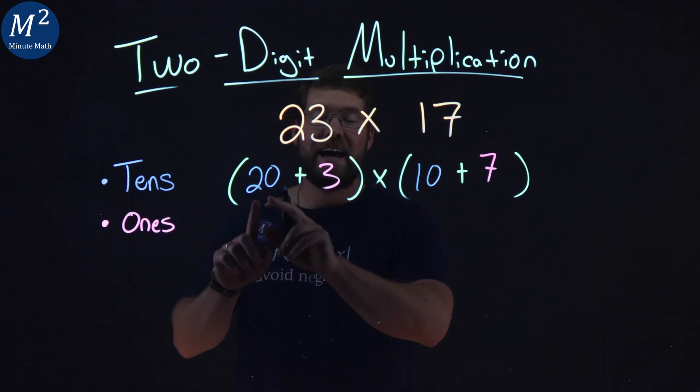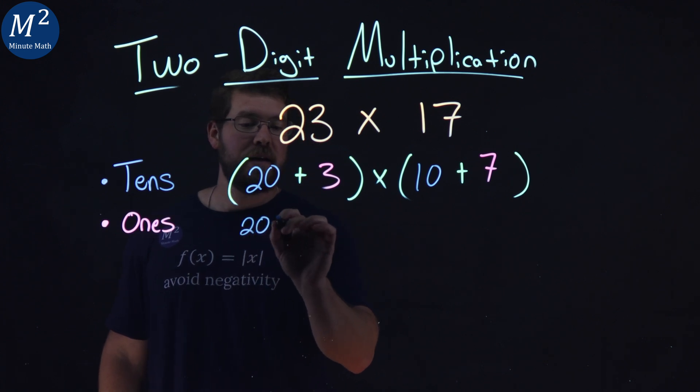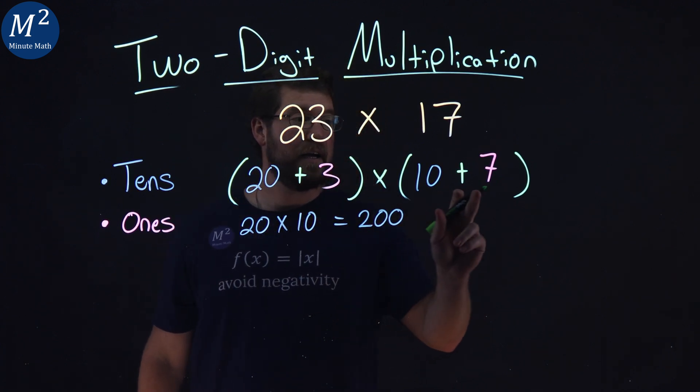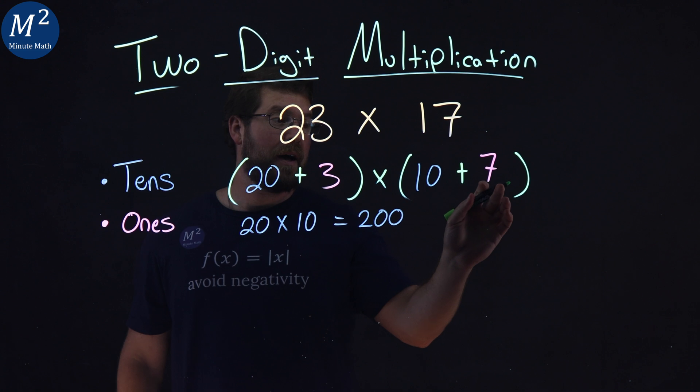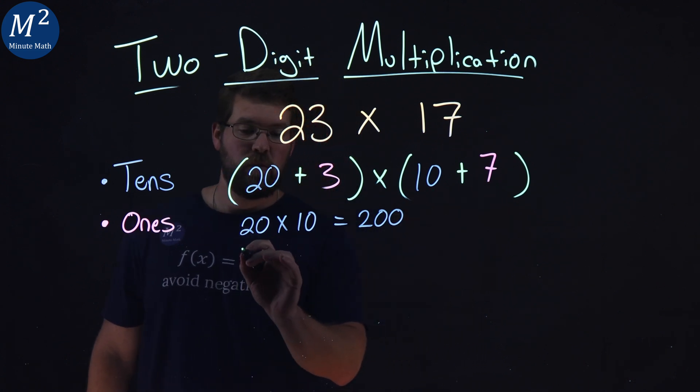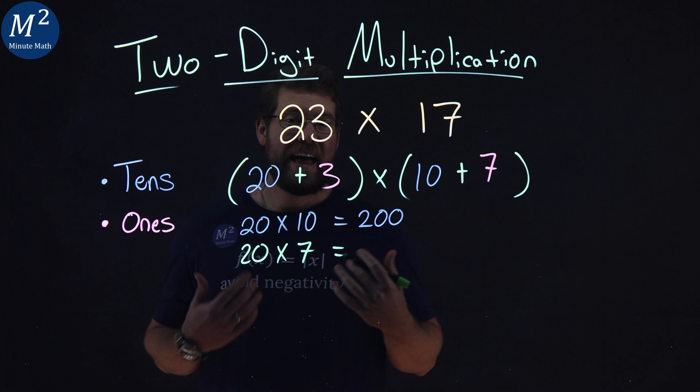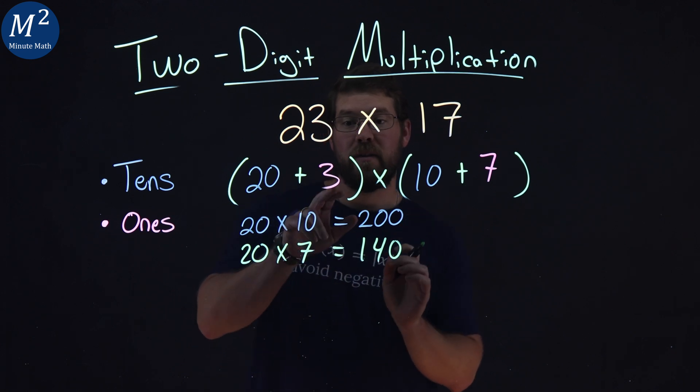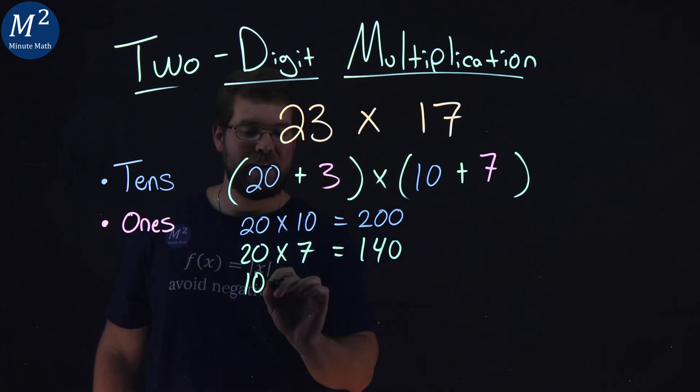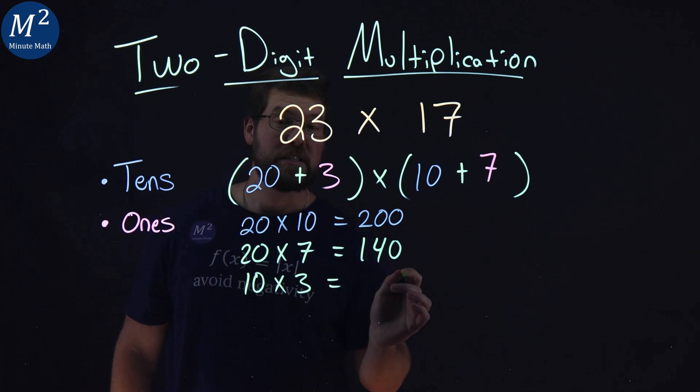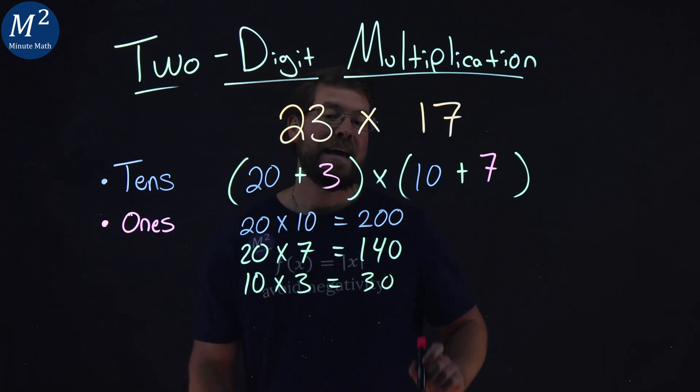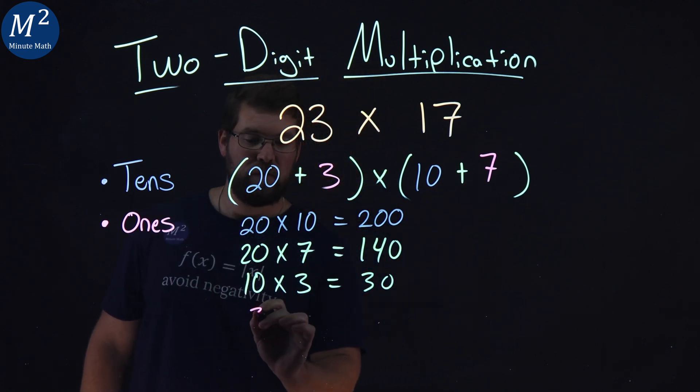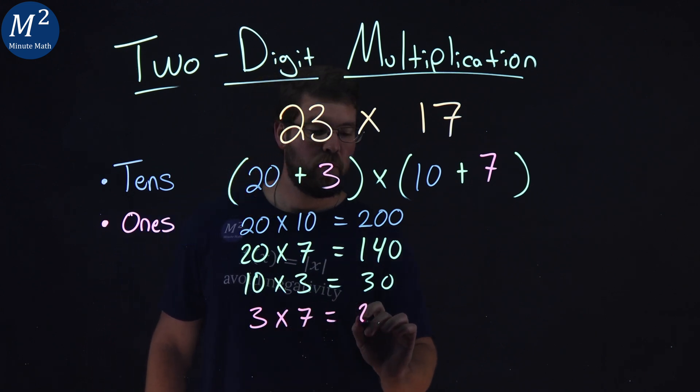Now, let's multiply our tens place together. We have 20 times 10, which is 200. Now, let's multiply the 20 times the 7, the tens place by the ones place over here. So we have 20 times 7, and that gives us 140. We're going to do the same thing here with this tens place by this ones place. So, 10 times 3, which gives us 30. And lastly, we're going to take the ones place and multiply them together. 3 times 7. So we have 3 times 7, which is 21.